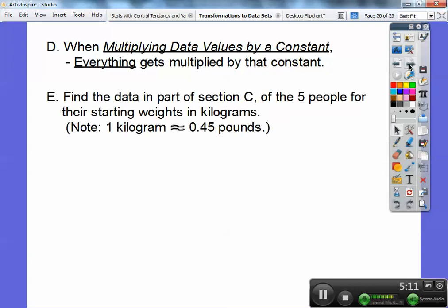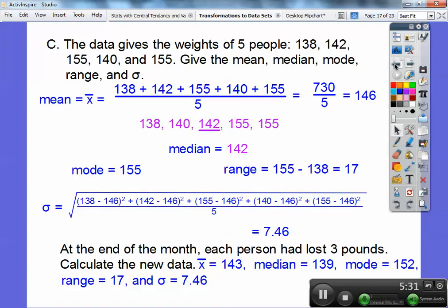So find the data in part of section C of the five people for their starting weights in kilograms, and then note that one kilogram is approximately equal to 0.45 pounds. So I have to multiply all those numbers by 0.45. And what you can do is you can go through and multiply this times 0.45 to get it in kilograms, this times 0.45 to get it in kilograms, and so on and do that, and then calculate the mean, add them all up.